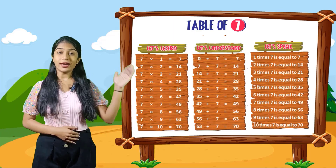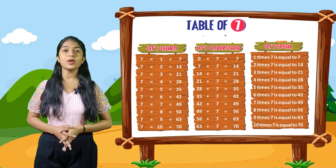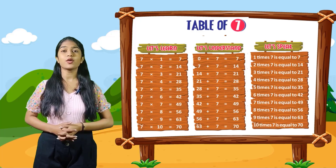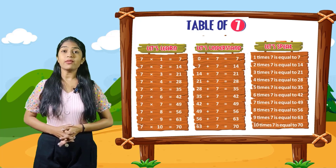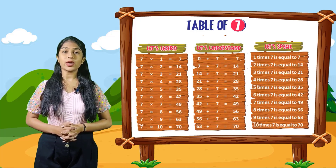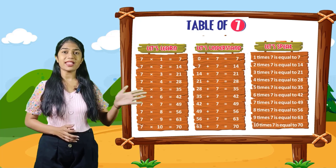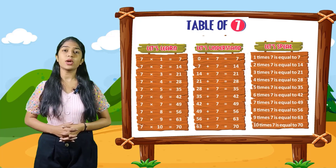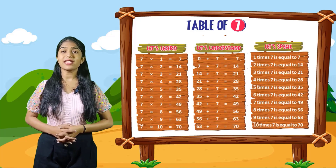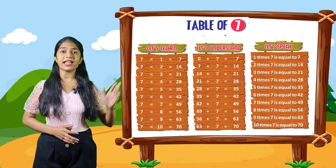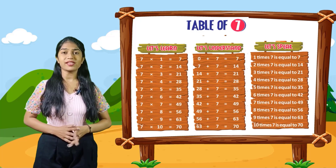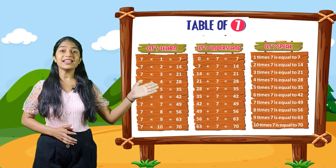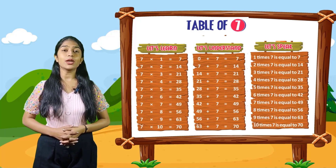So now let's speak. Kids, you have to speak out with me. 1 times 7 is equal to 7. 2 times 7 is equal to 14. 3 times 7 is equal to 21. 4 times 7 is equal to 28. 5 times 7 is equal to 35. 6 times 7 is equal to 42. 7 times 7 is equal to 49. 8 times 7 is equal to 56. 9 times 7 is equal to 63. 10 times 7 is equal to 70.